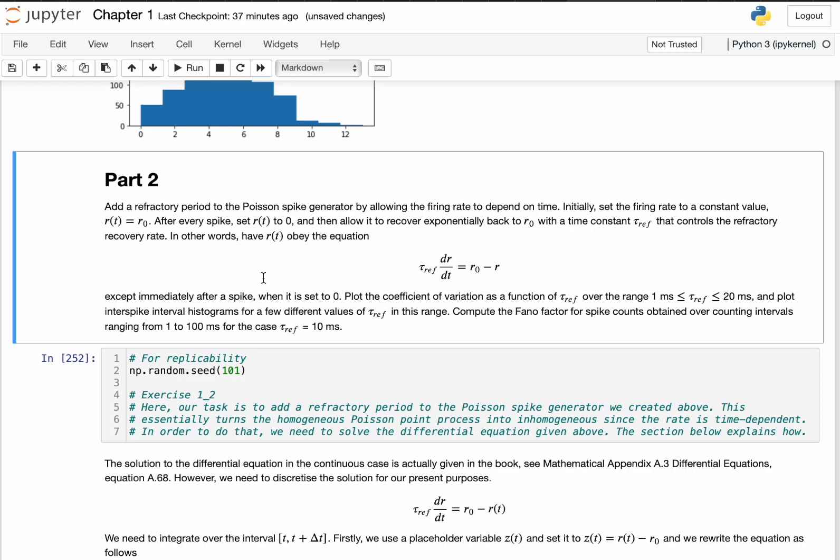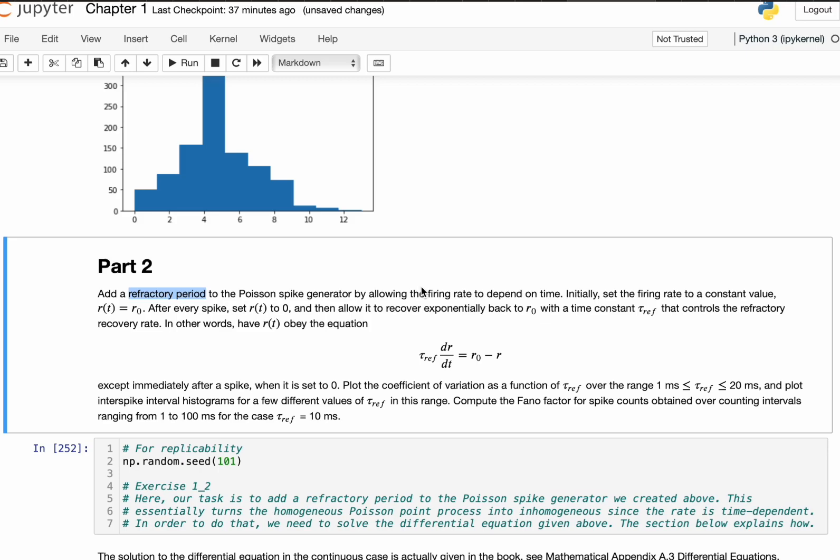But in this case we add a refractory period to the spike generator. So what this means is that the firing rate, and this is a lot more biologically plausible, is not constant all the time, but rather it decreases right after a spike. So when you have a neuron firing, you can think of this as the, for instance,